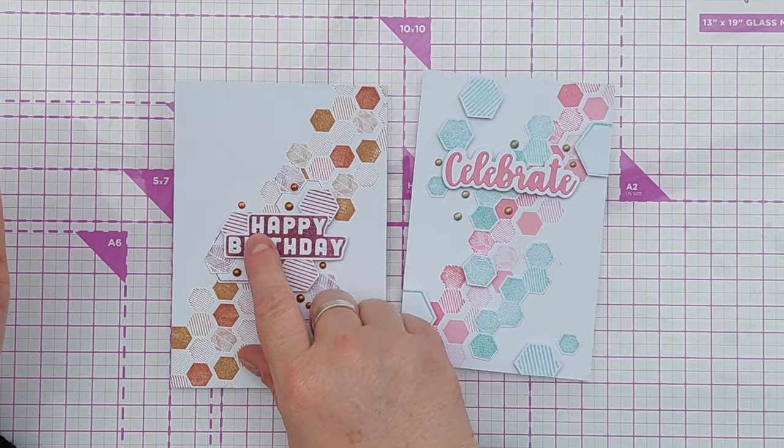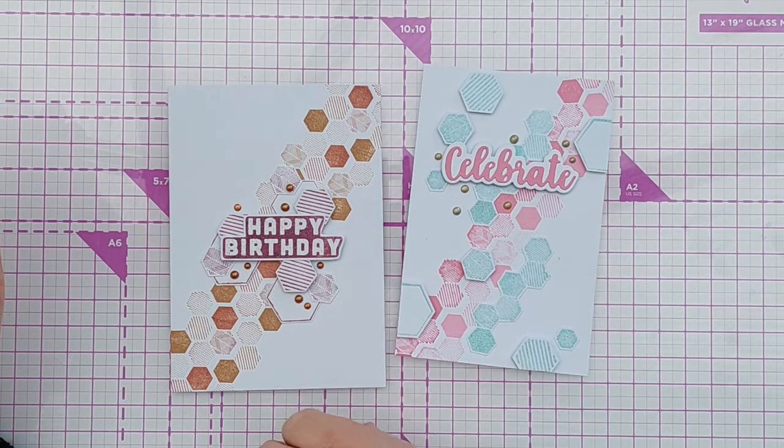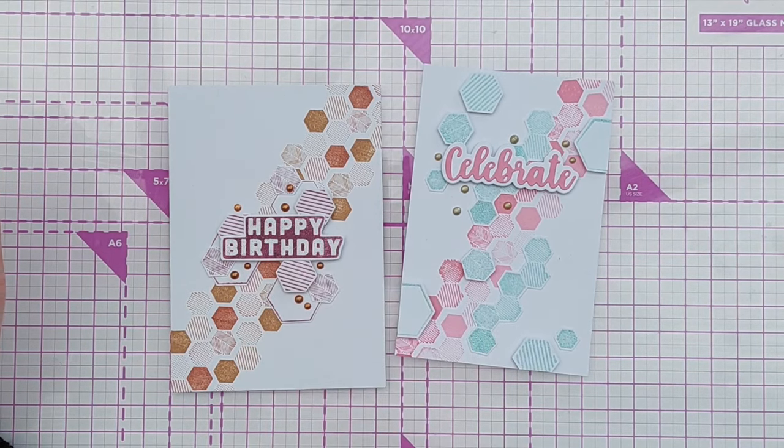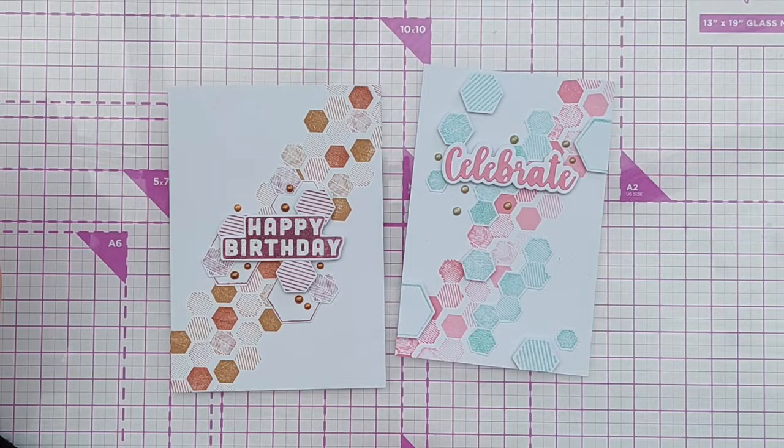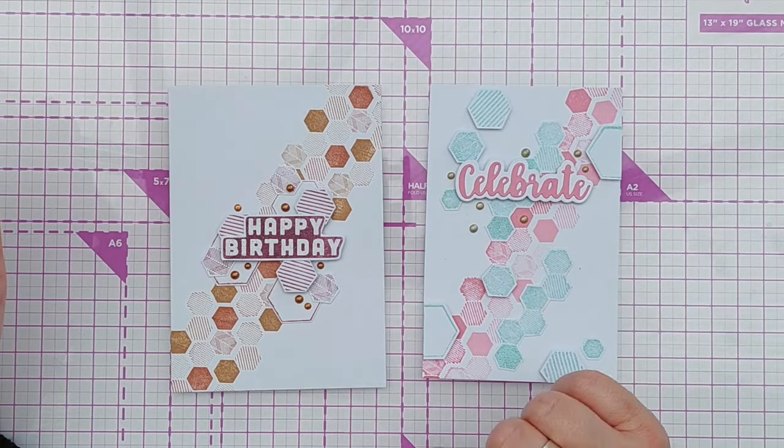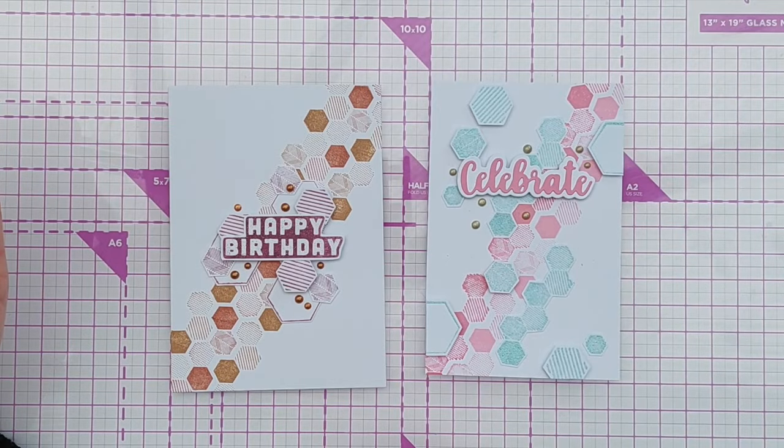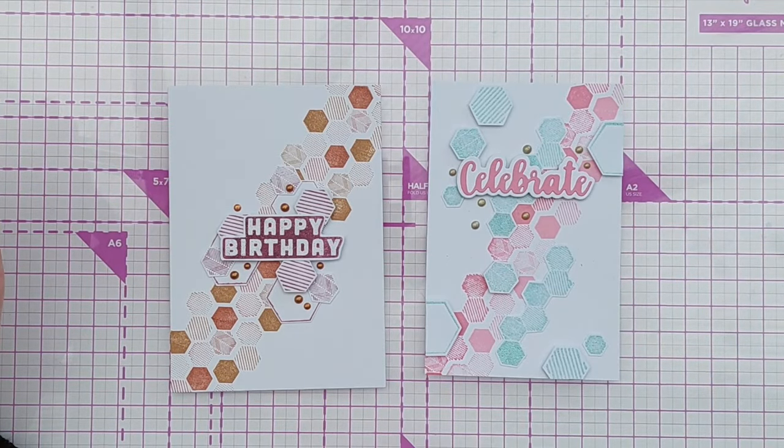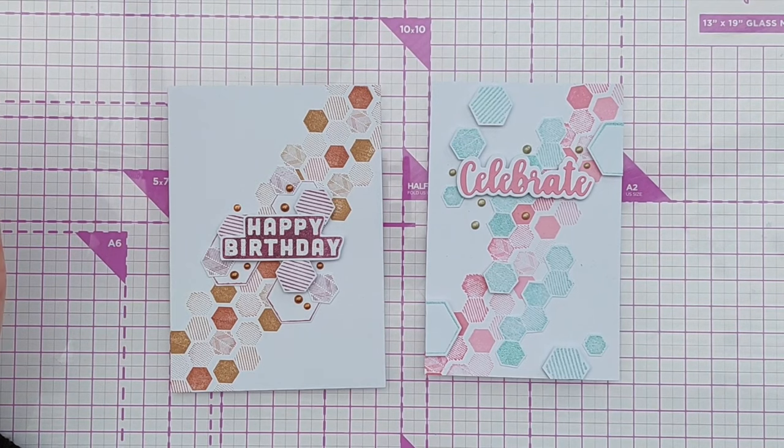This one I stamped and heat embossed in white ink on a piece of card that I'd coloured with some of the archival ink and this one I coloured some paper with Catherine Pooler ink, die cut it and popped it on its shadow and added it on and this one's got copper Nouveau drops and this one's got gold Nouveau drops.